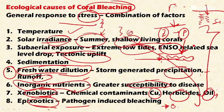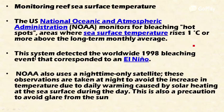These are all the important ecological causes for coral bleaching: temperature, solar radiation, sub-aerial exposure, sedimentation, freshwater dilution, inorganic nutrients, xenobiotics, and epizootics. Please try to remember these eight points from an examination point of view.